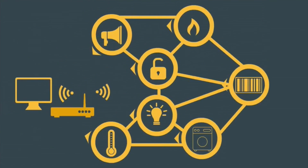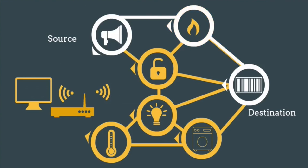Z-Wave operates under source-routed mesh architecture. In this scenario, if one device or node needs to communicate to another node at the end and it's not directly reachable, then it talks to the nearest node, and the nearest node passes the message to the next node, which then sends the message to the destination and vice versa. Nodes are added to a mesh network by the method of pairing and can be removed using the same method. A Z-Wave network can have up to 232 nodes.